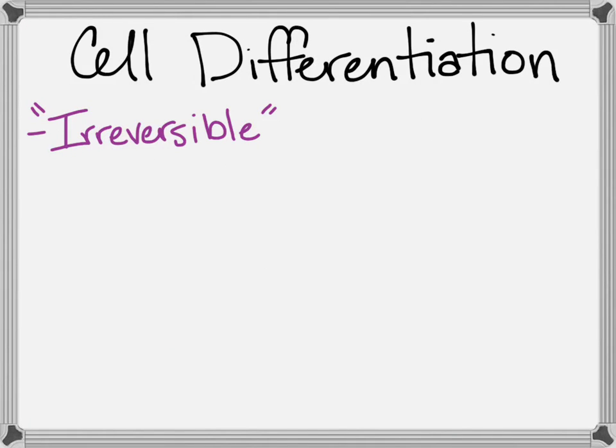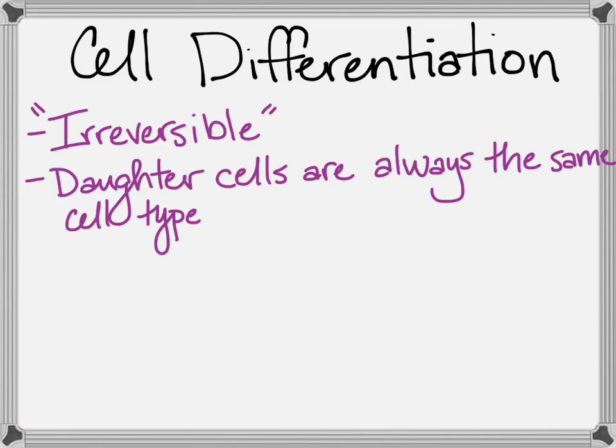Other cells become completely differentiated. Their fate is set, and when they go through mitosis, their offspring cells — their daughter cells — will always express genes to make them the same type of cell.